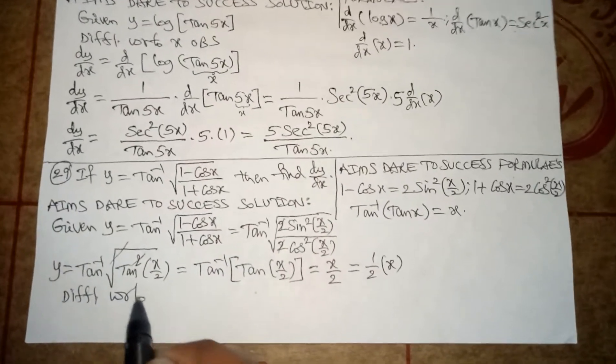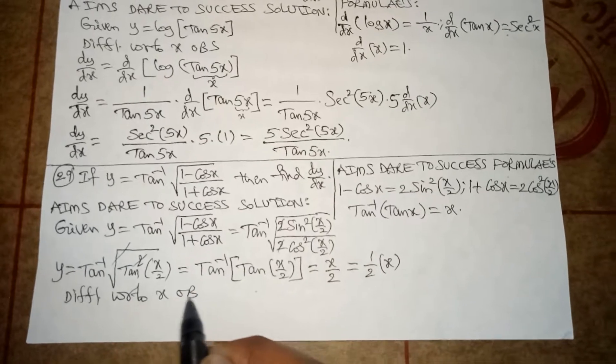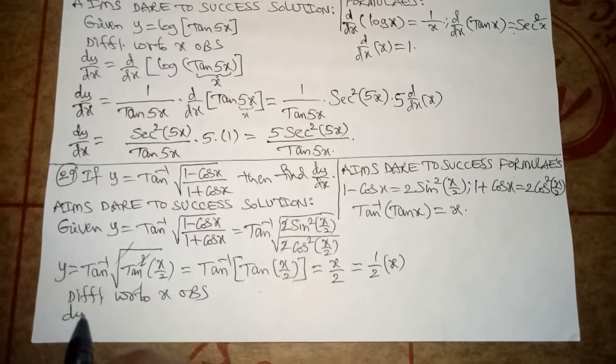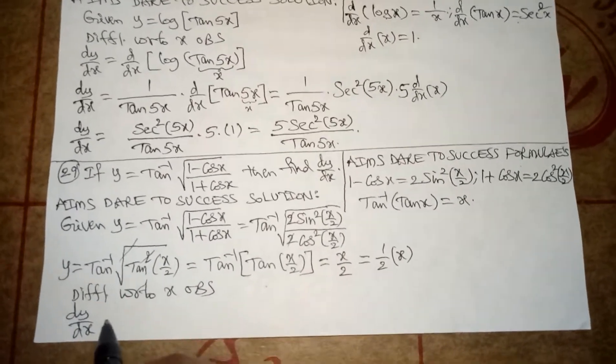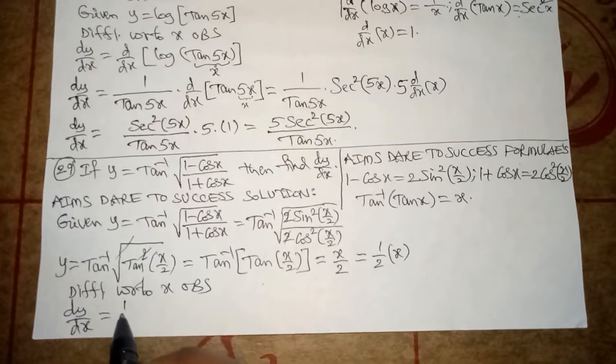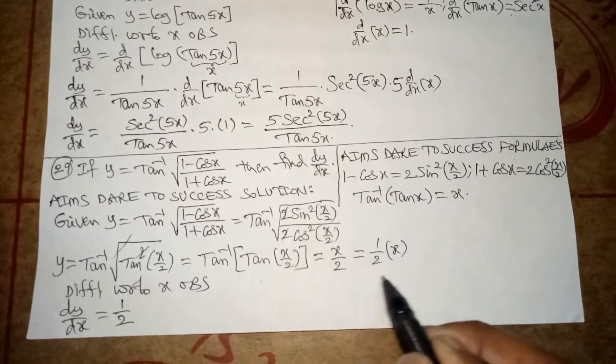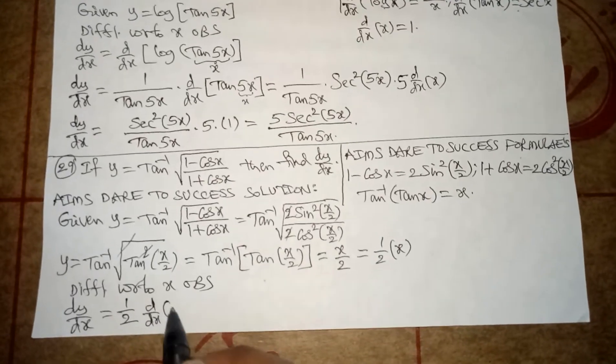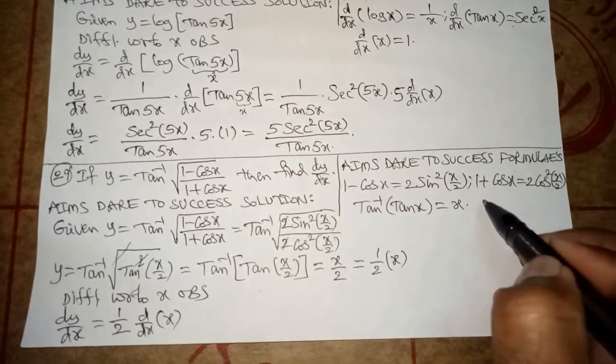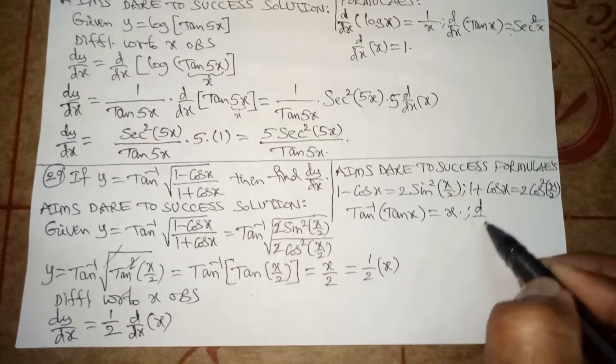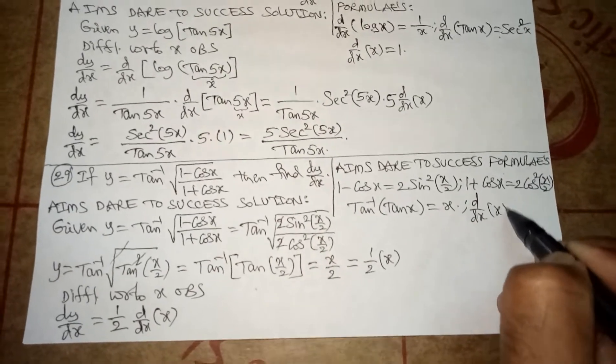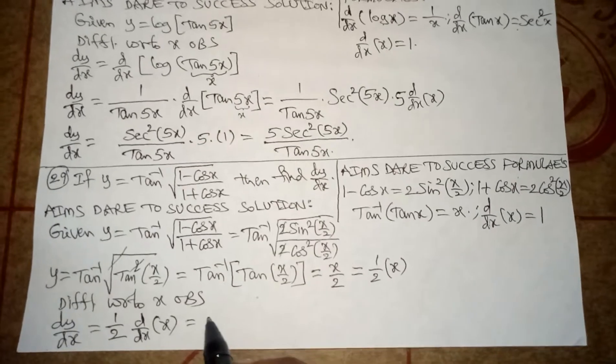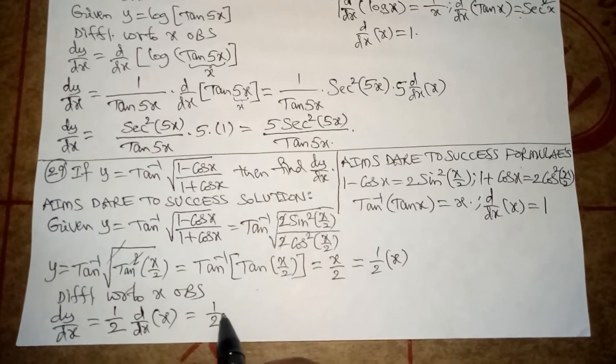Differentiating with respect to x on both sides, we get dy by dx is equal to 1 by 2 is constant multiplying with x. Write outside of 1 by 2 into d by dx of x. Here I am writing one more formula: d by dx of x is 1. That value you can write here, 1 by 2 into d by dx of x value 1.